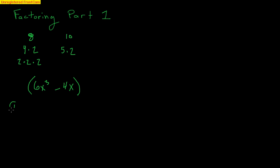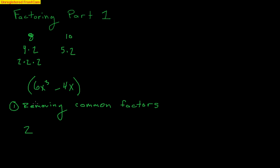The first method we're going to use to factor 6x³ minus 4x is what we call removing common factors. All we want to do with this method is look at the terms and see if there's anything common. Look at the numbers 6 and 4 — I see a 2 that's common. Two goes into 6 three times, and into 4 twice. Then look at the variables x³ and x. We can only take out the smallest amount, which is just a plain x — we can't take out x² because that's not in both terms. When we take 2x out, we're left with 2x times (3x² minus 2).